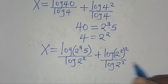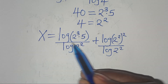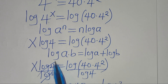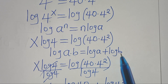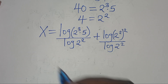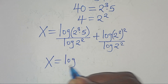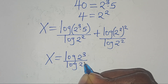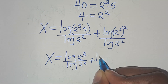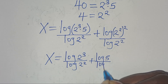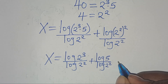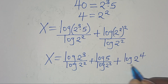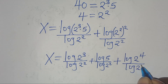Now log(2^3 × 5) is in the form log(a × b), which equals log(a) plus log(b). So x equals log(2^3) divided by log(2^2), plus log(5) divided by log(2^2), plus log(2^4) divided by log(2^2).